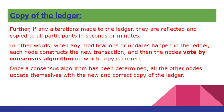When any modifications or updates happen in the ledger, each node constructs a new transaction. Every node has a new transaction, and then the nodes vote by consensus algorithm on which copy is correct. Once a consensus algorithm has been determined, all the other nodes update themselves with the new and correct copy of the ledger.